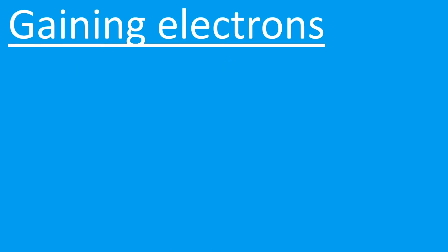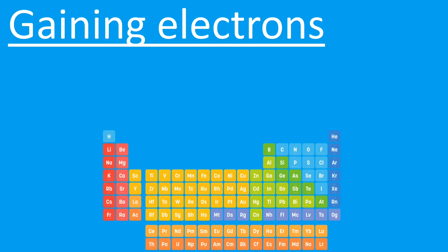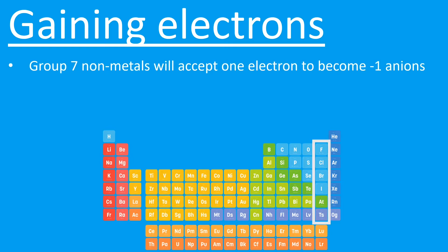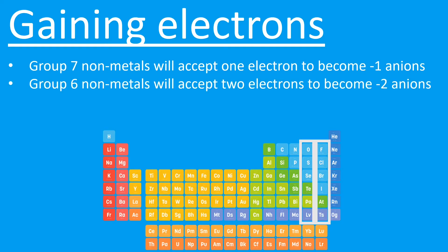When you gain electrons, the opposite happens. Electrons are negatively charged, so if you gain an electron you become negatively charged. Again, we can use the periodic table — this time looking at the right-hand side. Group 7 will accept one electron and become −1 anions; the term anion is given to a negative ion. Group 6 will gain two electrons and become −2 anions.